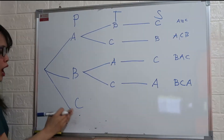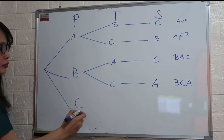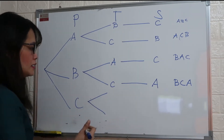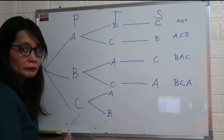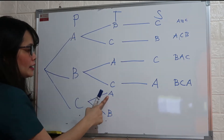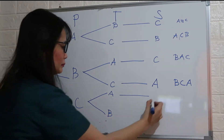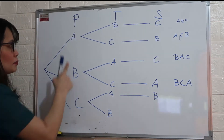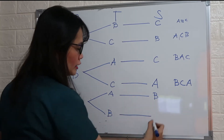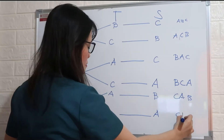What if your president is member C? For the treasurer, there are two options — member A or member B. Assuming C is president and A is treasurer, then B is secretary. And if C is president and B is the treasurer, then A is the secretary. So the outcomes are C, A, B and C, B, A.